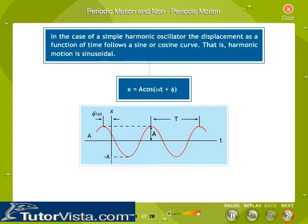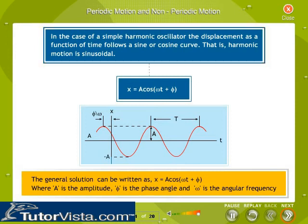In the case of a simple harmonic oscillator, the displacement as a function of time follows a sine or cosine curve — that is, harmonic motion is sinusoidal. The general solution can be written as X is equal to A cos(ωt + φ), where A is the amplitude, φ is the phase angle, and ω is the angular frequency.